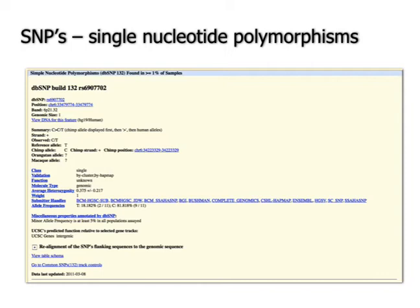Zooming in on one SNP from this particular gene: here's information about this position on chromosome 6, specifically nucleotide 33,479,774. That nucleotide is either a C or a T depending upon the person. Interestingly, this same SNP is also found in chimpanzees. This SNP database is turning out to be useful for pharmaceutical companies — drugs can be metabolized differently between different people, and sometimes characteristic SNPs can predict your response to a certain drug, which will end up being very useful clinically.